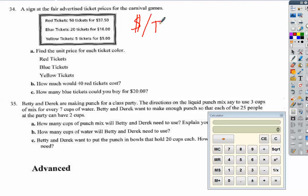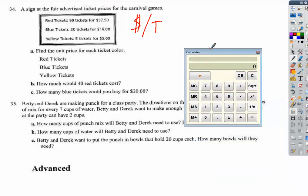That means I have to divide dollars by tickets. So for red, I'm going to go $37.50 divided by 50 tickets, and so that is 75 cents per ticket.